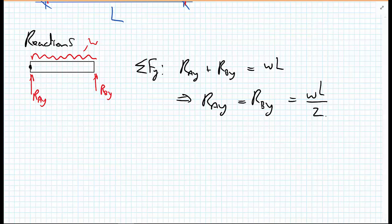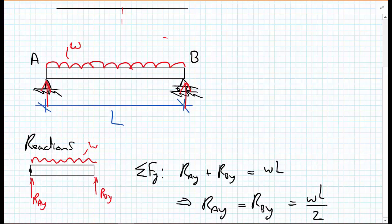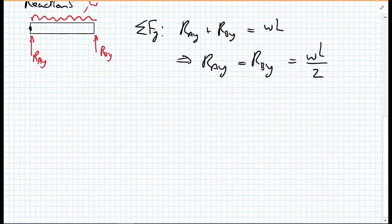Now we move on to the method of sections. Normally we draw cuts where there's a change in loading. Here, from the start of the UDL to point B, we have no dramatic change — just a continuous UDL — so we can consider the beam in one go and proceed to the method of sections.